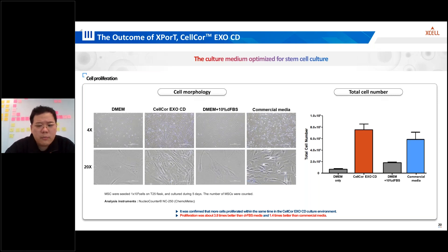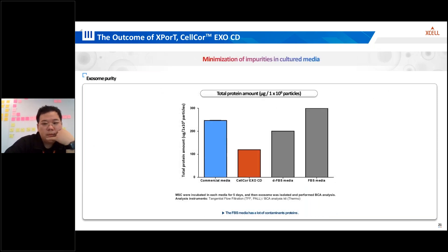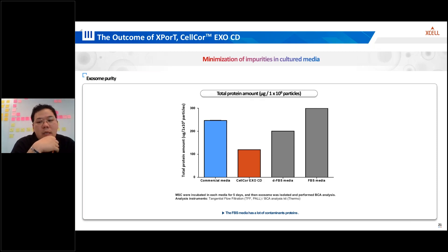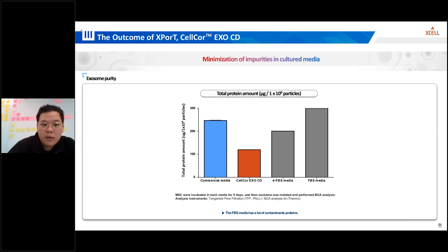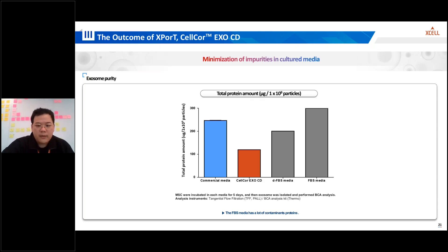However, highly culturable media have always had the limitation of impurities in the medium itself. So we investigated this for CELCO XCD. Impurities in culture media can compromise the purity and quality of exosomes. In this experiment, MSCs were incubated in different media formulations for five days and the exosomes were isolated and subjected to BCA protein concentration analysis. The research demonstrates that traditional epithelial media contain a significant amount of contaminant proteins. Conversely, CELCO XCD exhibits considerable reductions in impurities, leading to purer exosome populations. This highlights the importance of using media free from impurities to obtain high-quality exosomes for downstream applications.